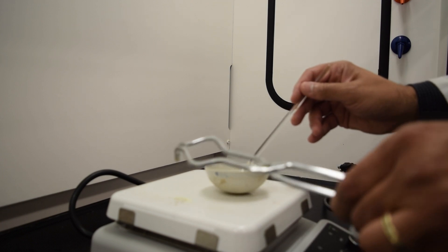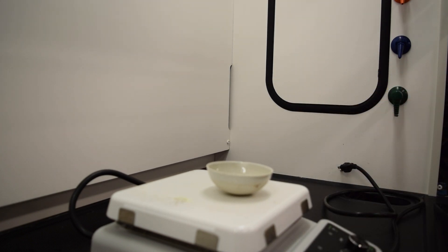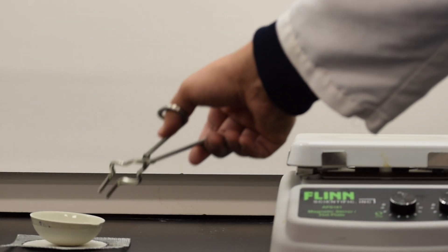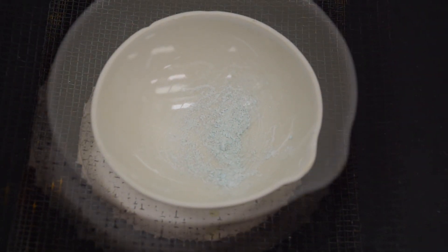Keep a close watch on your evaporating dish. As soon as the water has evaporated, use the tongs to remove the evaporating dish and set it on a wire gauze. The dehydrated solid remains.